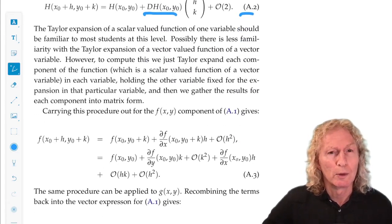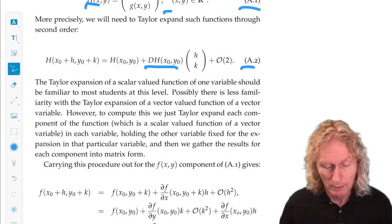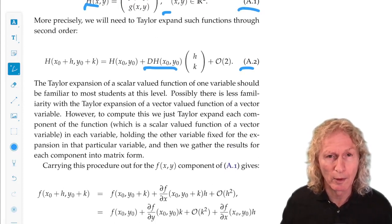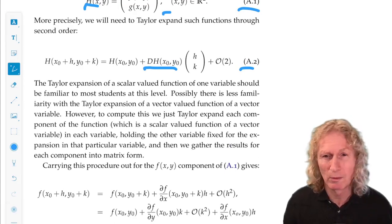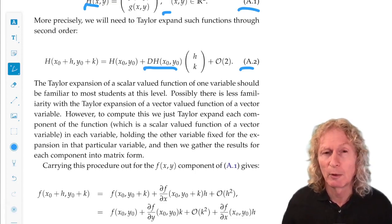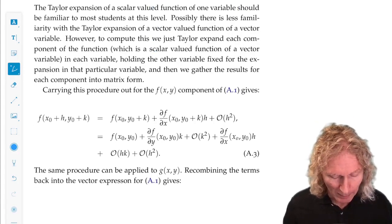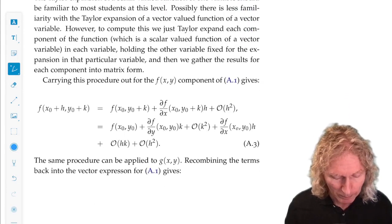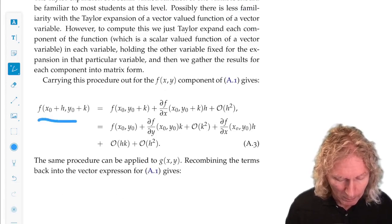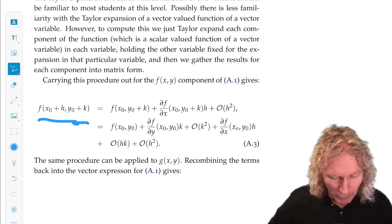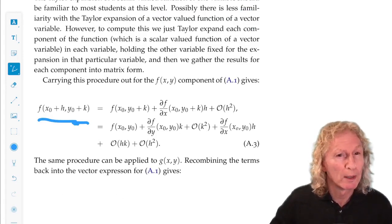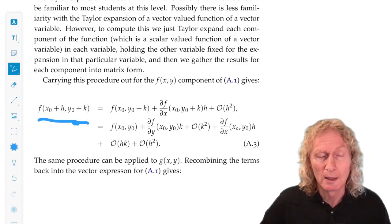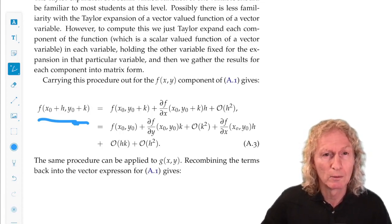Now you know how to Taylor expand a function of a single variable, and that's all you need to do here, except you do it twice. And here's what I mean by that. Let's look at each component of h, f and g separately. So f of x naught plus h, y naught plus k, we want to Taylor expand that in h and k about x naught, y naught.